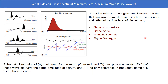When a seismic source generates P-waves in water, they propagate through the water, penetrate the seabed, and are reflected by subsurface interfaces. Sources include chemical explosives, piezoelectric effects, sparkers, boomers, air guns, and water guns. Corresponding to these sources we get different wavelet types: minimum phase, maximum phase, mixed phase, and zero phase wavelets.